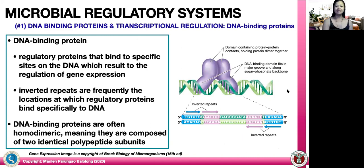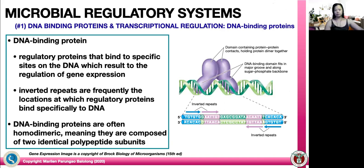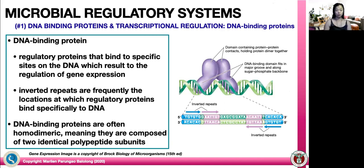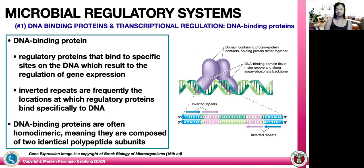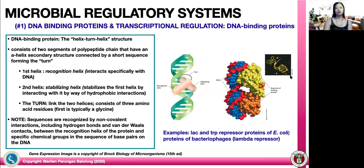The first type involves DNA binding proteins and transcriptional regulation. DNA binding proteins are regulatory proteins that bind to specific sites on the DNA, and this binding results in the regulation of gene expression. Take note that inverted repeats are frequently the locations at which regulatory proteins bind specifically to DNA. DNA binding proteins are often homodimeric, meaning they are composed of two identical polypeptide subunits.